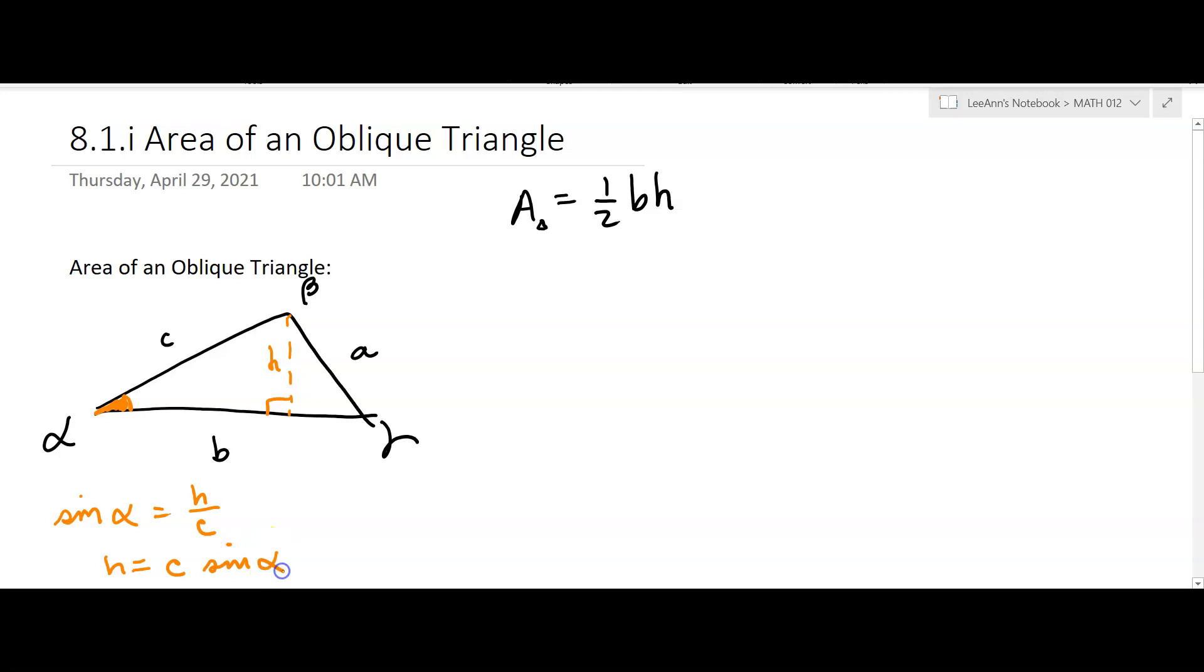Now we're assuming that we know things like the sides of the triangle or the angles. So we're assuming they give us either this or this or this, and they're telling us this or this or this.